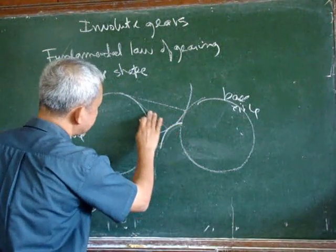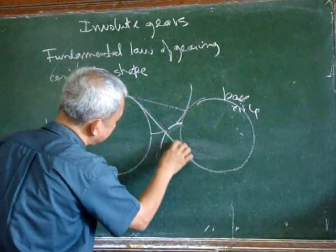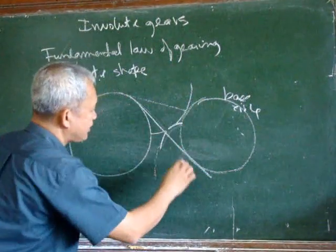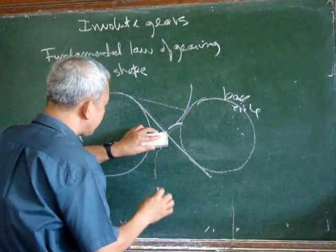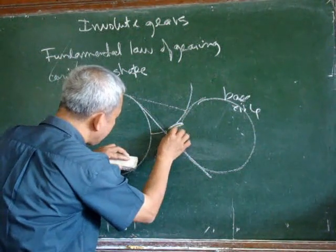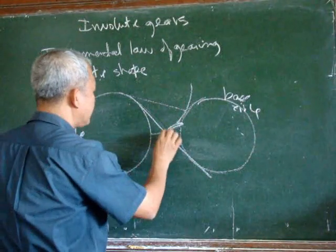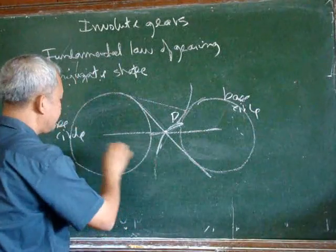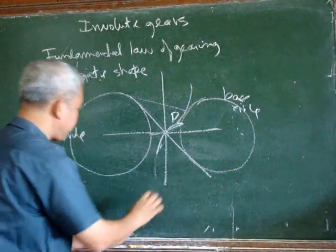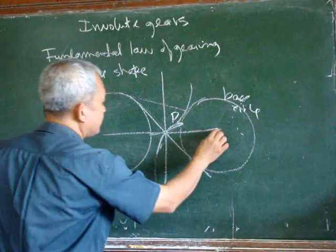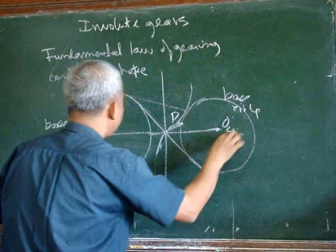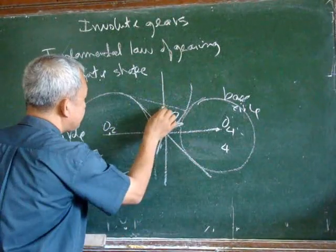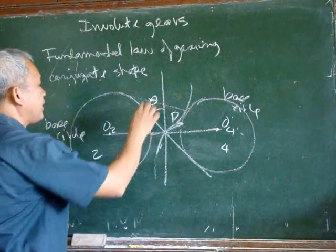A line that is tangent to this base circle and this base circle. We can have this particular point here as point P. If we draw this line of centers and draw this perpendicular line to the line of centers here, this is 4, this is O4, this is 2, and this is O2. This particular angle is the pressure angle.